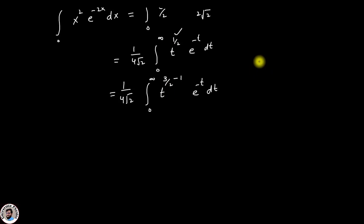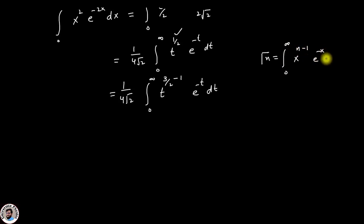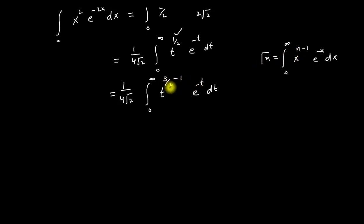Now, the definition of the Gamma function is: Gamma(n) equals the integration from 0 to infinity of x to the power (n minus 1) e to the power minus x dx. If we compare this equation with our integral, the value of n is 3/2. So by using the definition of the Gamma function, this equation will become equal to 1 over 4 root 2 times Gamma(3/2).